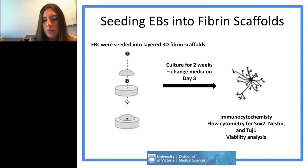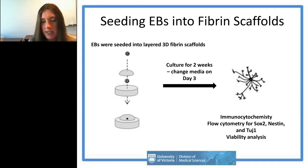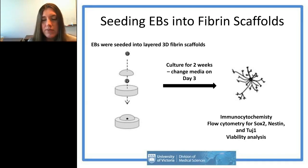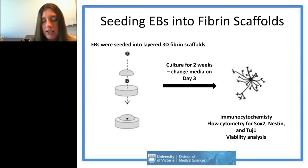At the end of our study we performed viability analysis, immunocytochemistry staining for neuronal marker TUJ1, and flow cytometry for three markers: SOX2 (pluripotency), nestin (neural progenitor), and TUJ1 (neuronal).